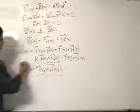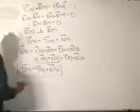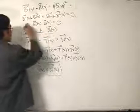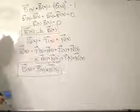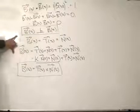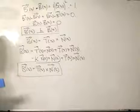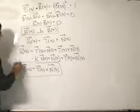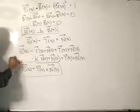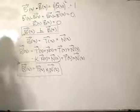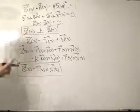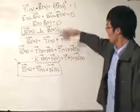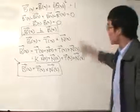We have two statements here, and by pairing these two statements we are going to form another definition — a statement of the first derivative of the binomial factor. In the textbook they immediately give you these two definitions and just state the result, but I'm going to try to explain how this actually goes.